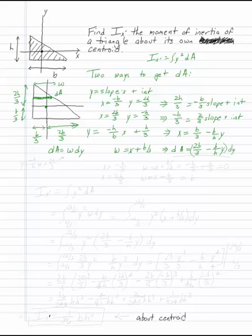The other way is to look at the equation for the line based entirely on w. If you look at that, you have y equals minus h over b times w plus 2h over 3. That works too, and you can solve that for w and plug into dA.